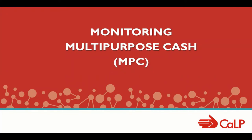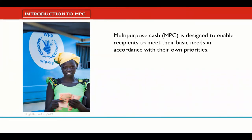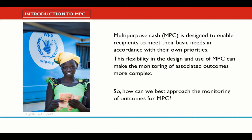In this video, we'll be looking at monitoring multi-purpose cash, or MPC. You may have noticed that many of the outcome indicators we looked at in the previous session were for specific sectors. Multi-purpose cash is designed to enable recipients to meet their basic needs in accordance with their own priorities. This flexibility in the design and use of MPC can make the monitoring of associated outcomes more complex. So, how can we best approach the monitoring of outcomes for MPC?